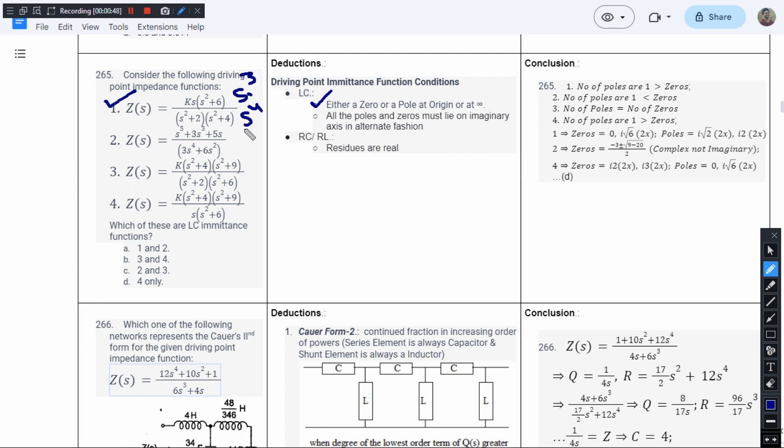And here, numerator power is s⁵ and the denominator is s⁴. Here number of zeros is one more than number of poles, so this could also be the answer.